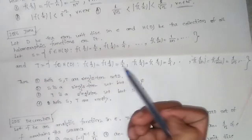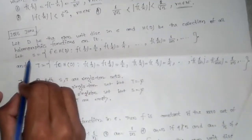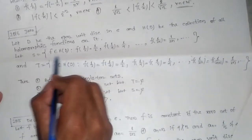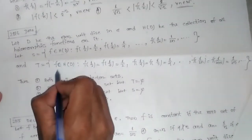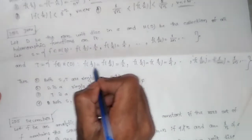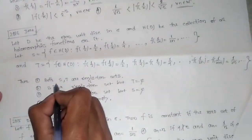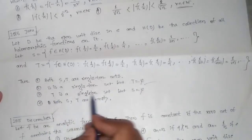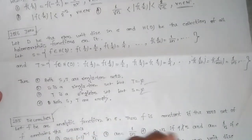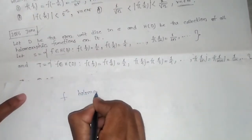Now for the 2016 June question: Let D be the open unit disk in ℂ and H(D) be the collection of all holomorphic (analytic) functions on D. S is the collection of all functions f ∈ H(D) such that f(1/2) = 1/2, f(1/4) = 1/4, ..., f(1/2n) = 1/2n. T is the collection of all f ∈ H(D) such that f(1/2) = f(1/3) = 1/2, f(1/4) = f(1/5) = 1/4, and so on.